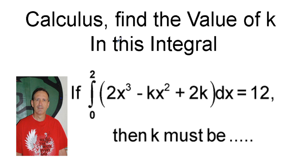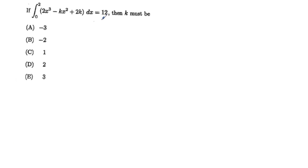Find the value of k in this integral. We have a recent test, this problem I think was problem number six. If the integral from 0 to 2 of 2x cubed minus kx squared plus 2k dx equals 12, then k must be, and you have some multiple choice options.